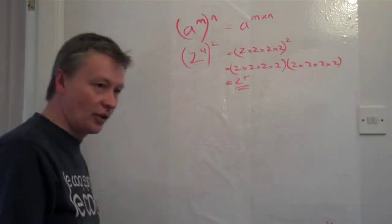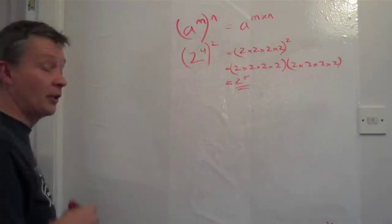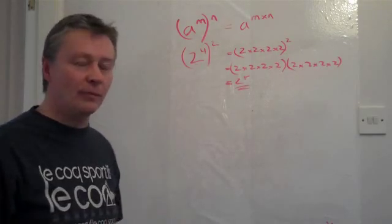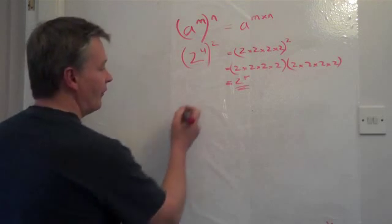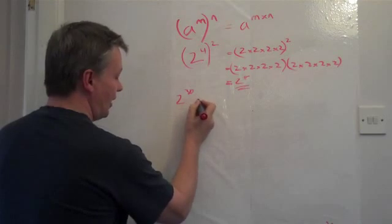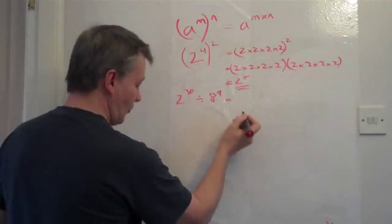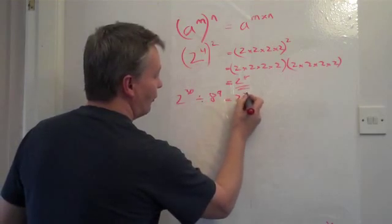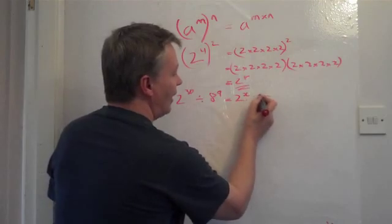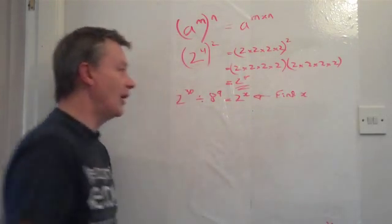Let's choose another one. And I'm going to choose something slightly different here. And I'm going to use a practical GCSE exam question. And this is round about level B, level A, something like that. And the exam question is 2^30 divided by 8^9 equals 2 to the power of which number? And what they want you to do is to find the value of x. So find x.